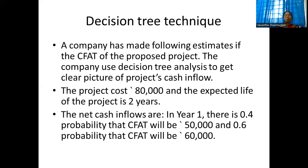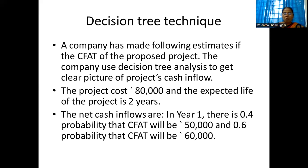Decision tree problem: A company has estimated cash flows after tax for a proposed project. The project costs 80,000 and the expected life is 2 years. In Year 1: 40% probability of receiving 50,000 cash flow after tax, and 60% probability of receiving 60,000 cash flow after tax. In Year 2, branching from 50,000: probabilities of receiving 24,000 (20%), 32,000 (30%), and 44,000 (50%). The firm uses a 10% discount rate.